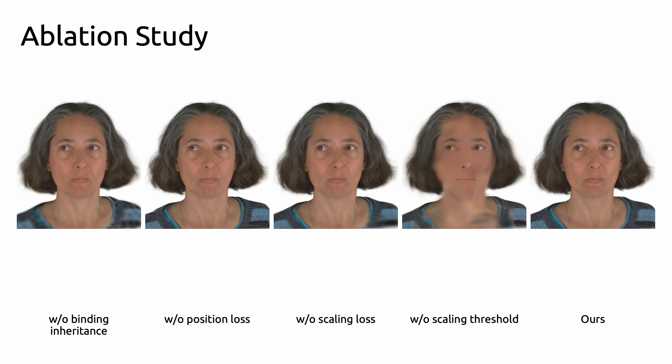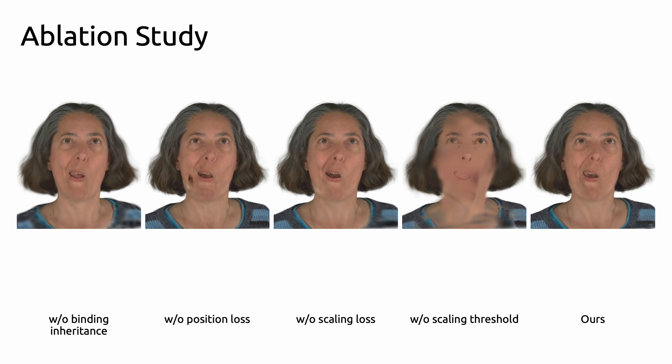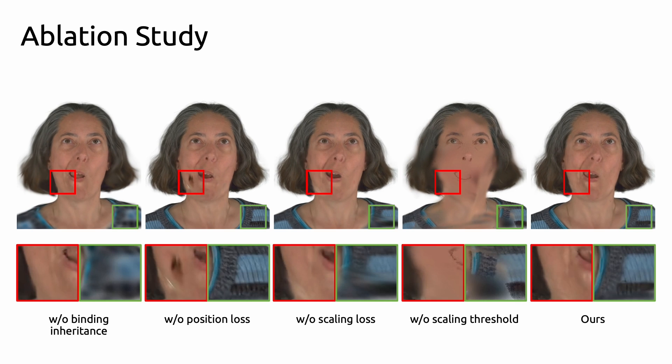To validate each component's necessity, we disable them in reenactment settings. Binding inheritance is crucial to densify Gaussian splats for visual fidelity. The position loss mitigates artifacts under extreme expressions, while the scaling loss combats blur induced by large splats. The scaling threshold preserves rendering quality by avoiding excessively small Gaussian splats.